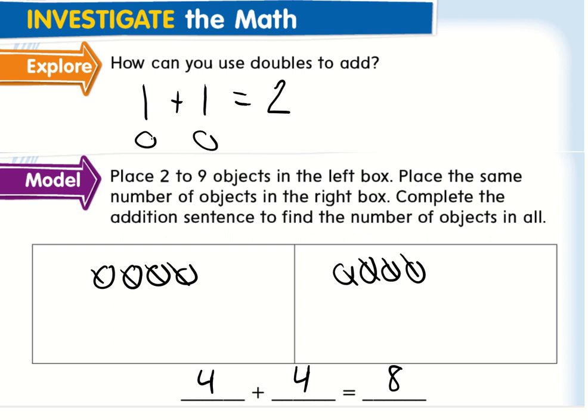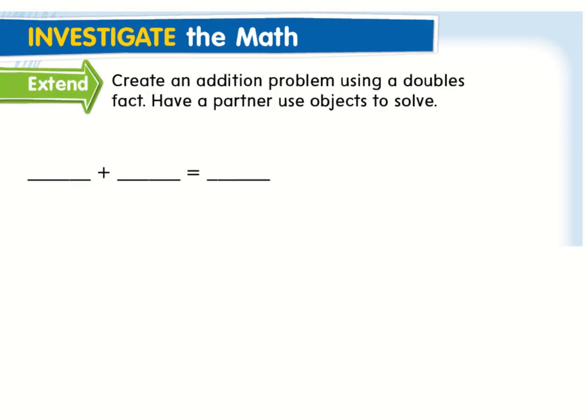Like I said, these double facts are only going to be effective if we know them and we are really good at them, so make sure boys and girls are practicing these at home. So what we're going to do is create an addition problem using a doubles fact. You guys can either have a partner at home or a partner in school solve this together. I'm going to write out seven plus seven, which I want you guys to try to solve at home.